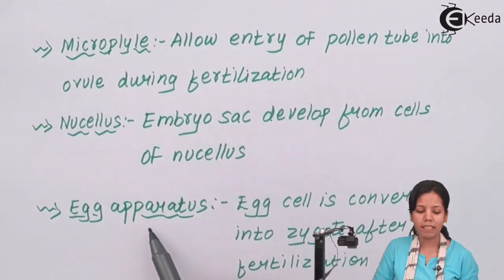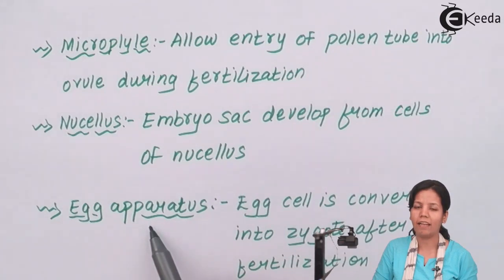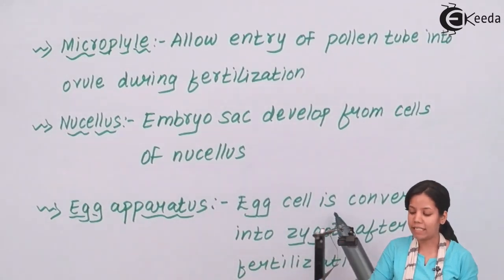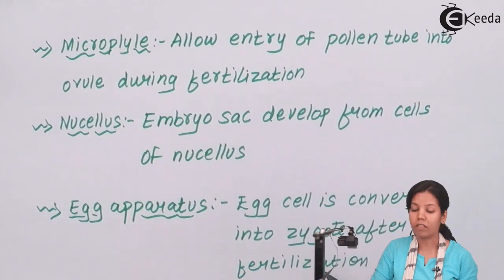Egg apparatus basically consists of antipodal cells, synergid cells and the egg cell or you can say the female gamete. The egg cell is converted into zygote after fertilization in the egg apparatus.